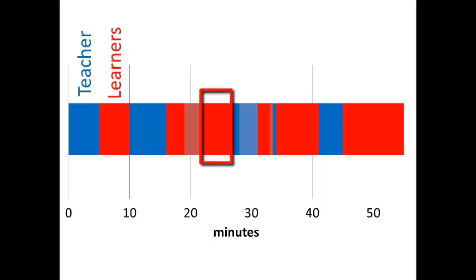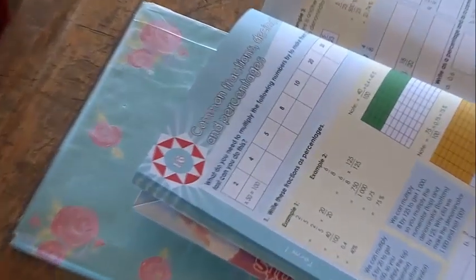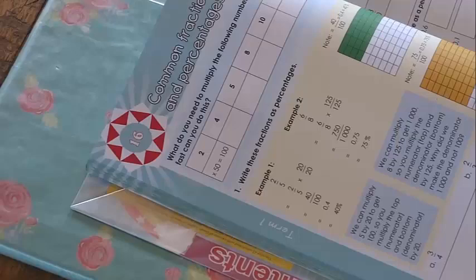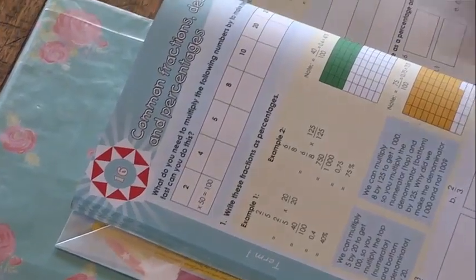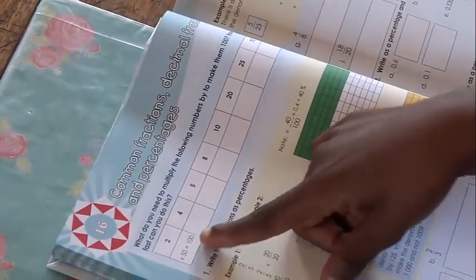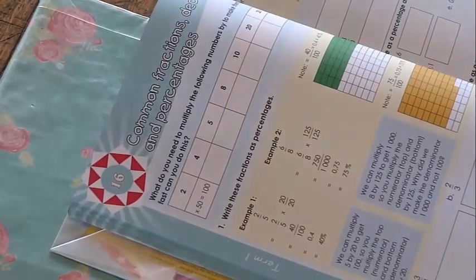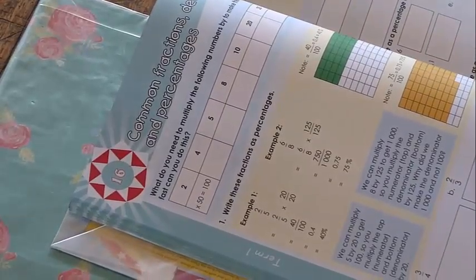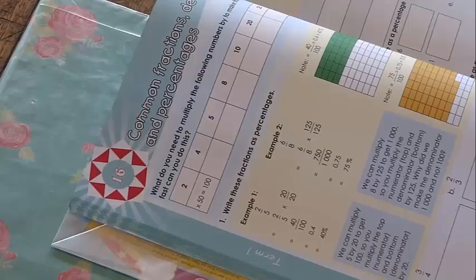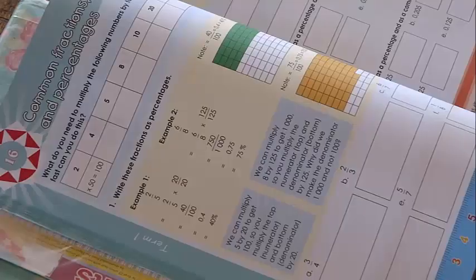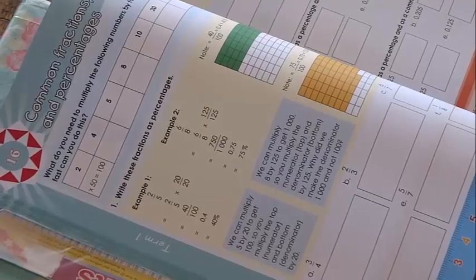For another five minutes, Mr. Potsane gets the learners to answer some questions in their books. He will use these questions to introduce a method of calculating percentage. They've done the first one for you. The number percentage means out of 100. So, the first one there, you multiply two by 50 to get 100. Four, you multiply one by 50 to get 100.